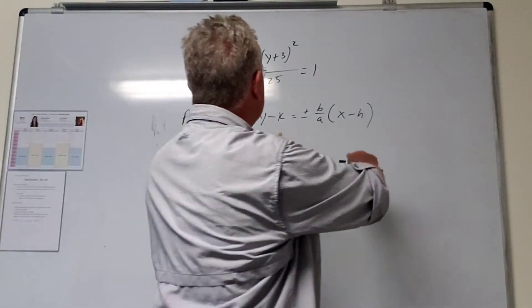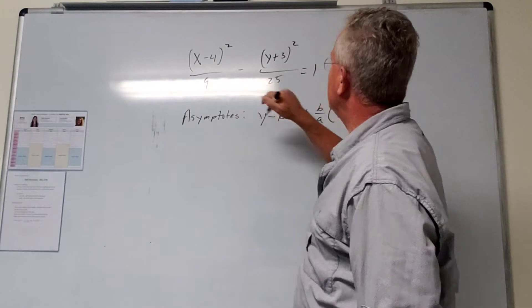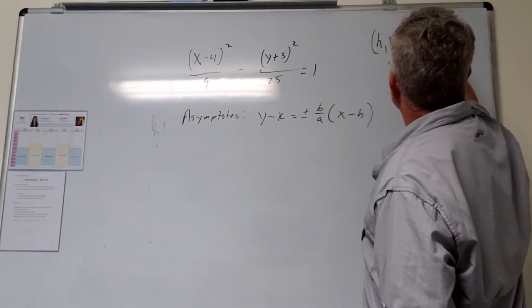So we need to figure out h and k. The general form is x minus h, so h is 4.